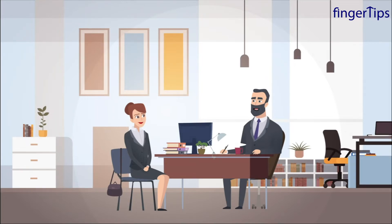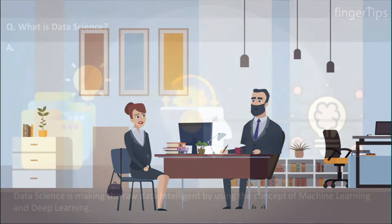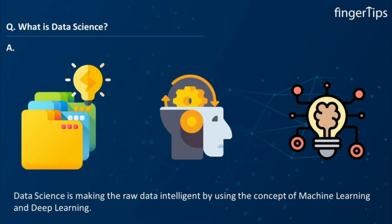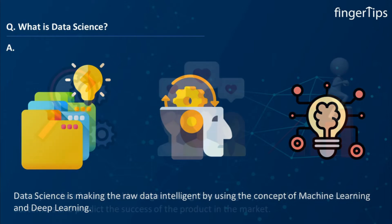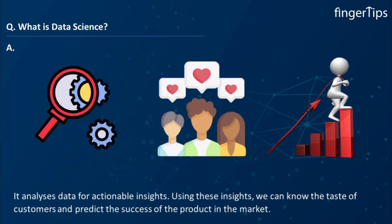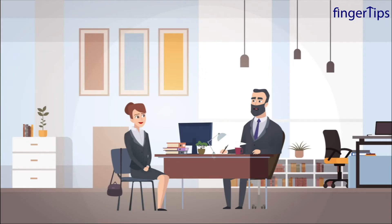Ananya, can you tell me what is data science? Yes sir. In simple words, data science is making raw data intelligent by using the concepts of machine learning and deep learning. It analyzes data for actionable insights. Using these insights, we can know the tastes of customers and predict the success of a product in the market.